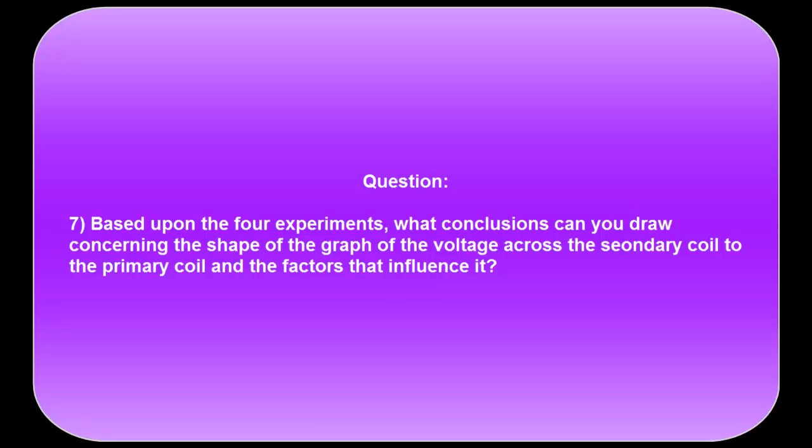Having completed four experiments, what conclusions can you now draw concerning the graph of the output voltage to the input voltage of a transformer? What is its shape? What determines the nature of that shape? For instance, if it's a straight line, what determines the slope? If it's a parabola, what determines the coefficients a, b, and c? What is different about an experimental graph compared to what the book's theory says? What factors may be influencing any discrepancies? Determine these factors and be prepared to discuss them in class.